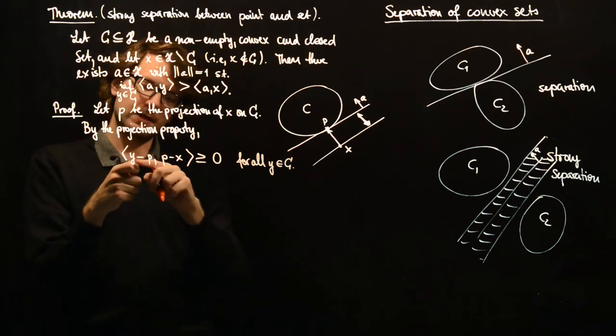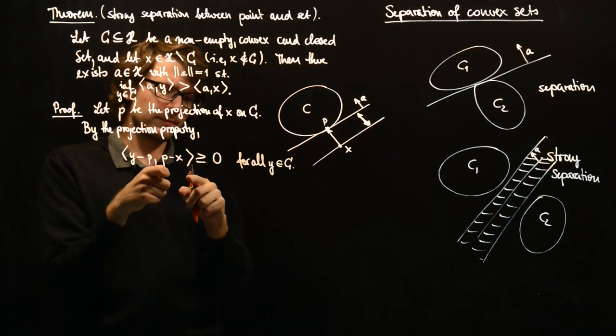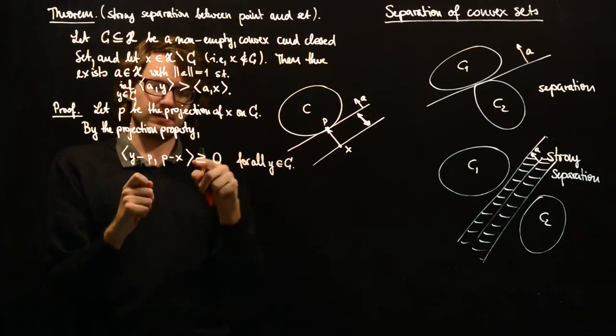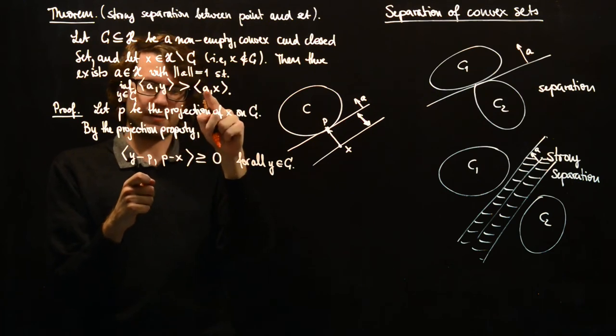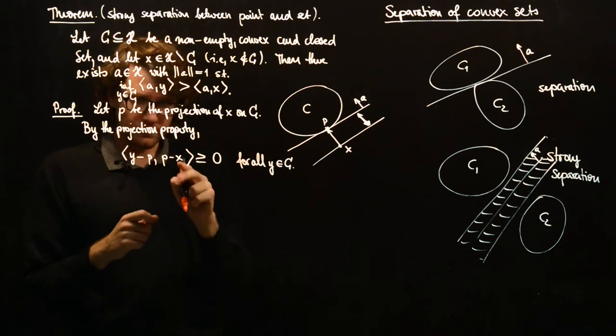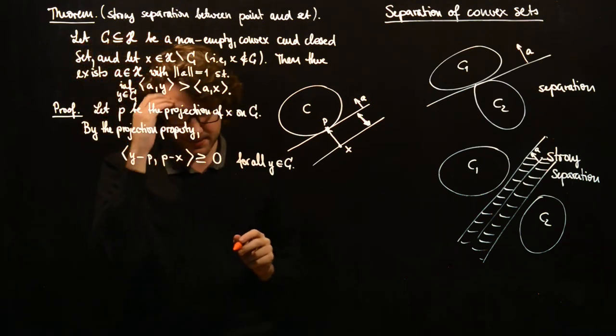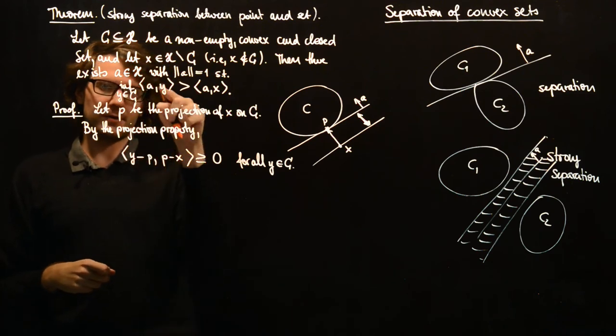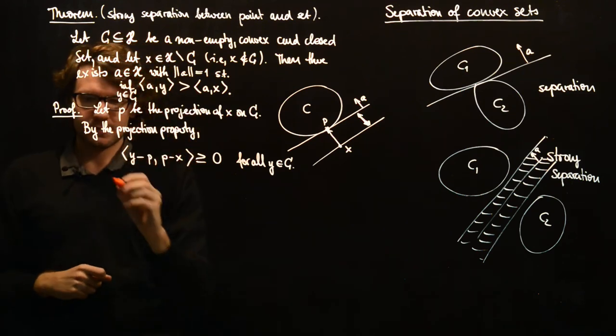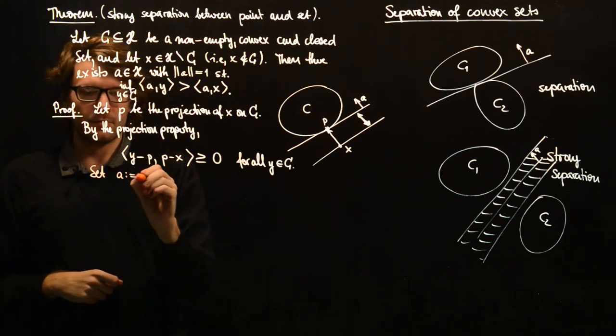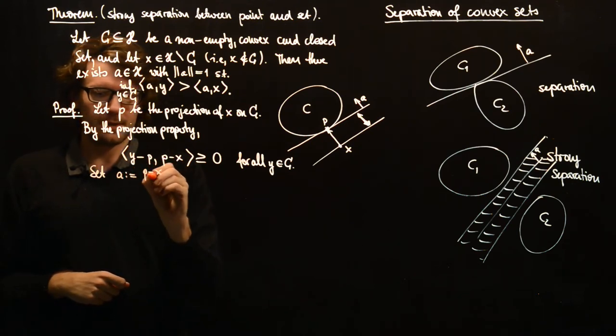So we want the infimum of Y with a vector A should be greater or equal than the inner product of the same vector A with X. So how do we do this? It is clear that the only inner product of Y is with P minus X. So set A to P minus X.